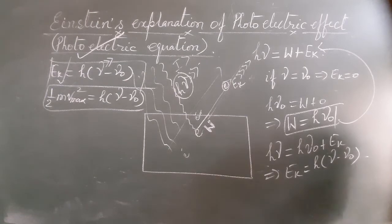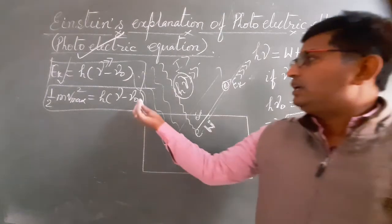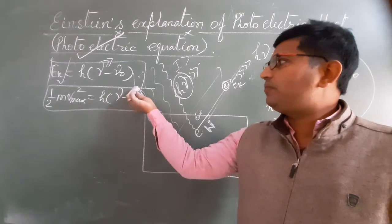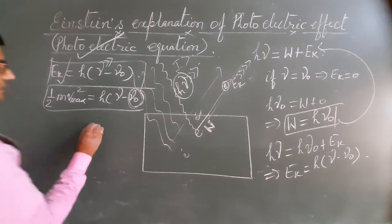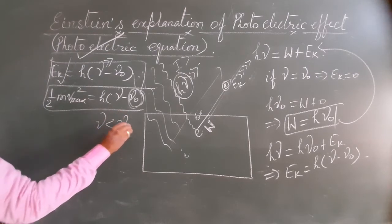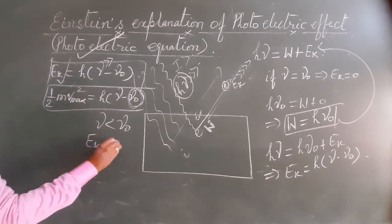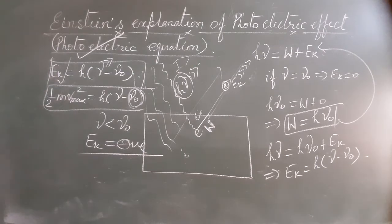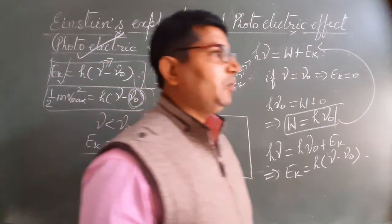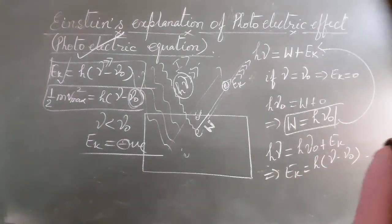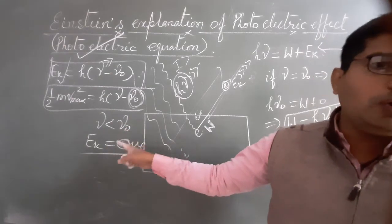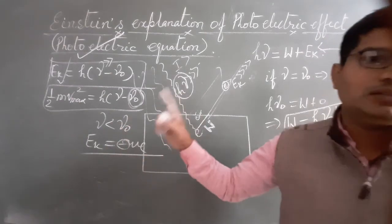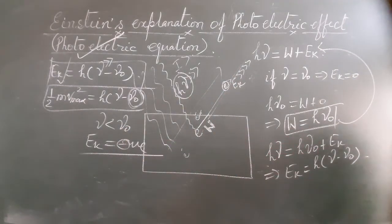Fourth law: There exists a minimum frequency below which there is no emission of photoelectrons. If nu is less than nu naught, EK becomes negative, which is not possible. Kinetic energy of emitted photoelectrons cannot be negative. This means below threshold frequency, there will be no emission of photoelectrons. Fifth law: There is no time lag between incident light and emitted photoelectrons.